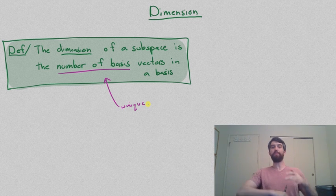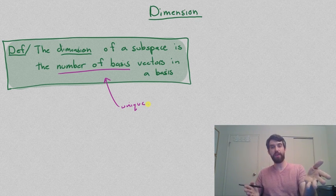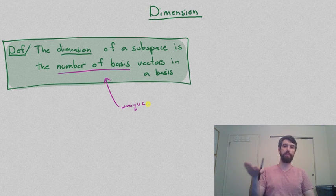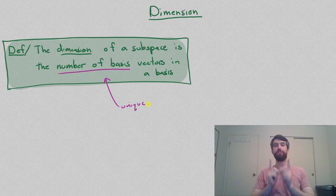So, for example, a plane is associated with the number 2, and we call that number 2 the dimension, and represents the fact that every possible basis for the plane, and there's a whole bunch of them, but every possible one of them is going to have two vectors in it.